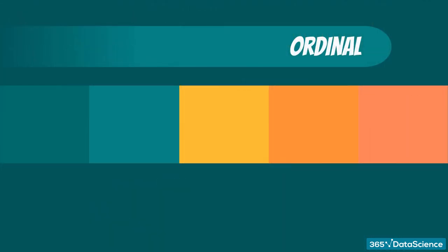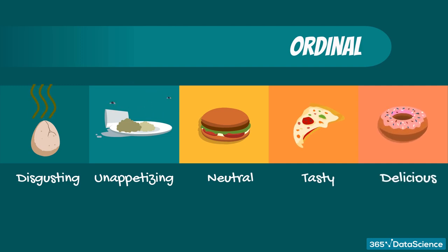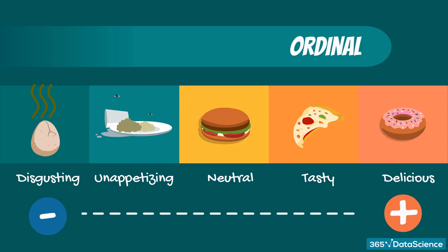Ordinal data, on the other hand, consists of groups and categories which follow a strict order. Imagine you have been asked to rate your lunch, and the options are disgusting, unappetizing, neutral, tasty, and delicious. Although we have words and not numbers, it is obvious that these preferences are ordered from negative to positive. Thus, the level of measurement is qualitative ordinal.